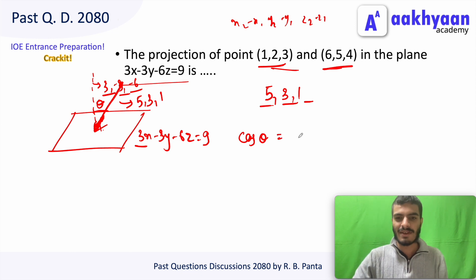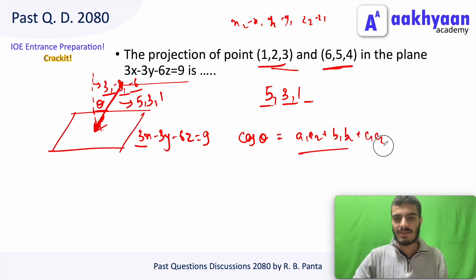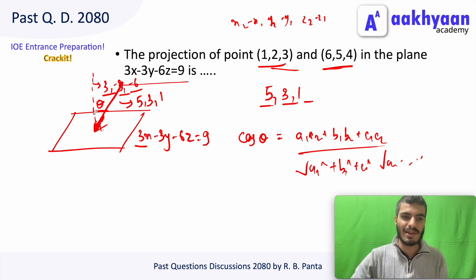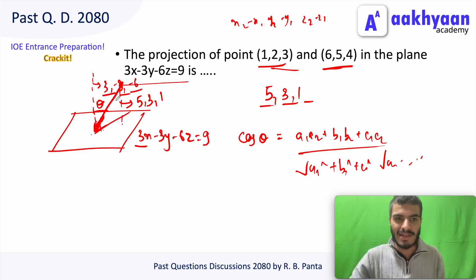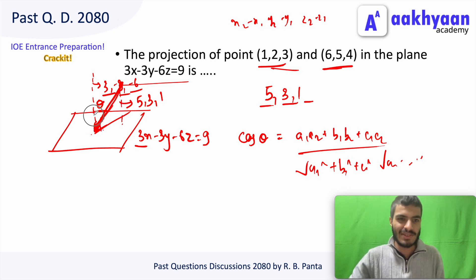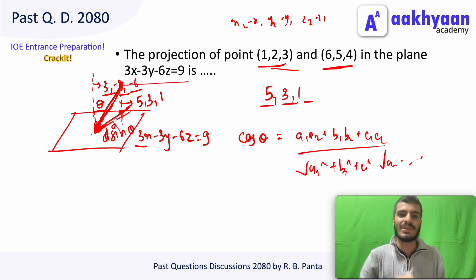The cosine of theta is expressed in terms of a1, b1, c1, b2. The distance formula involves the original distance multiplied by sin theta, giving the sine theta component for the projection length.